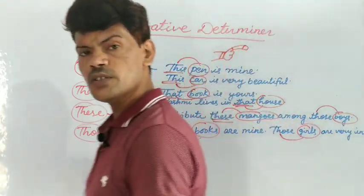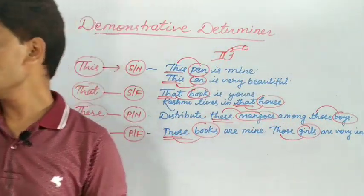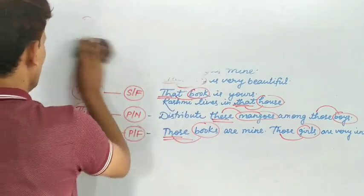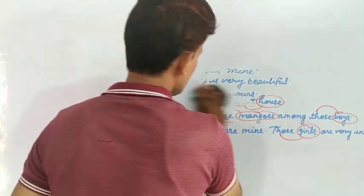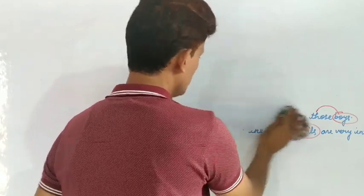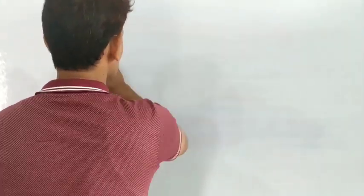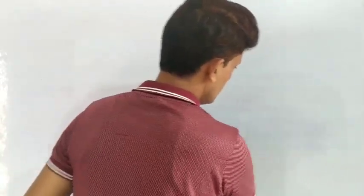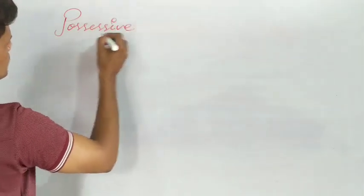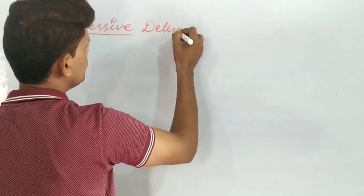Next we are going to discuss about possessive determiners. First one is article determiner, second is demonstrative determiner, and third is possessive determiner. Possessive determiner means possession. Possessive determiner shows possession, relation, or attachment.